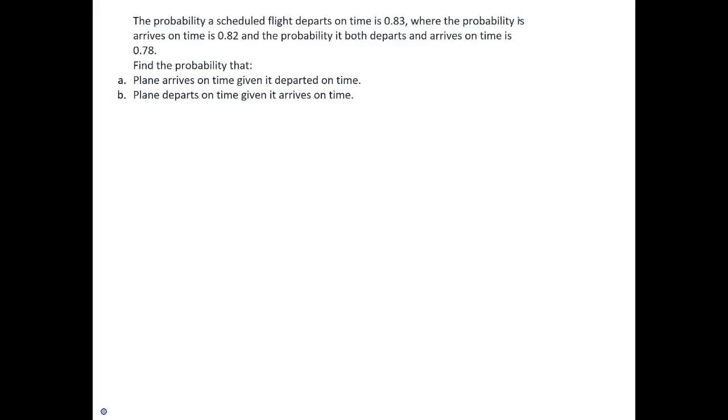First of all, we know the probability that it departs on time is equal to 0.83, the probability that it arrives on time is equal to 0.82, and the intersection is the probability of D and A, which is equal to 0.78. So the probability that it both departs and arrives on time is 0.78.